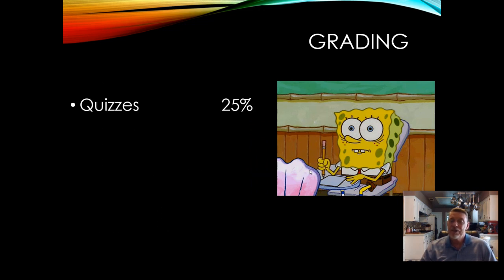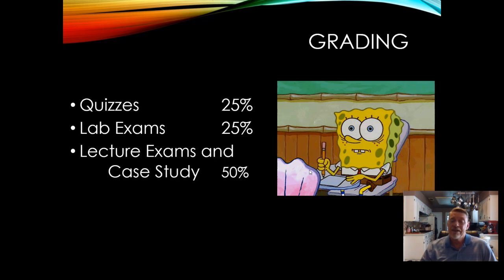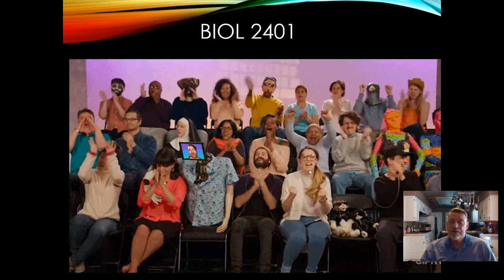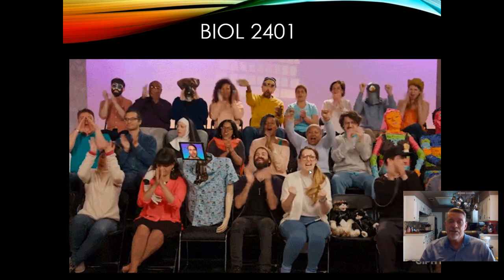For grading: the average of all your quizzes (with the lowest two dropped) is 25%. The average of your lab exams (highest of two attempts each) is 25%. The lecture exams and case study average is 50% — and again, you get two attempts on lecture exams with the higher grade recorded. The grade calculation formula is in the syllabus. I hope you understood everything and that it met with your satisfaction. If you have any questions, please email. Good luck — I'll see you throughout this semester.